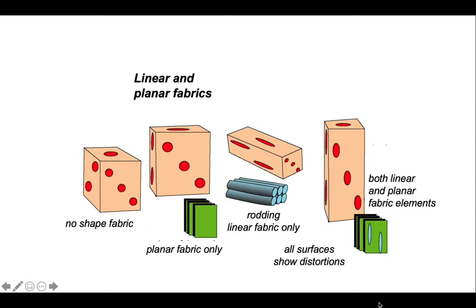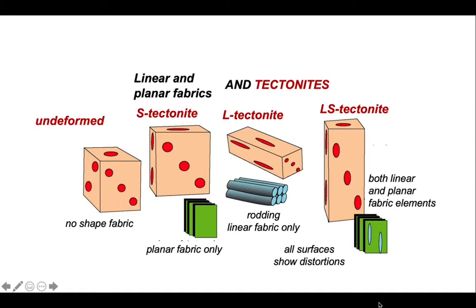These features provide a terminology. These types of rocks are called tectonites. S stands for schistosity or planar fabric; L stands for lineation. So an S-tectonite has only a planar rock fabric, an L-tectonite has only a linear rock fabric, and an LS-tectonite has both. These sorts of tectonites form under different deformation conditions, so these types of observations are important to make.